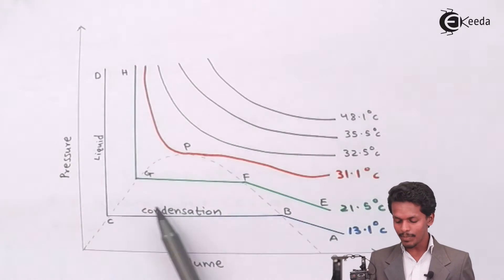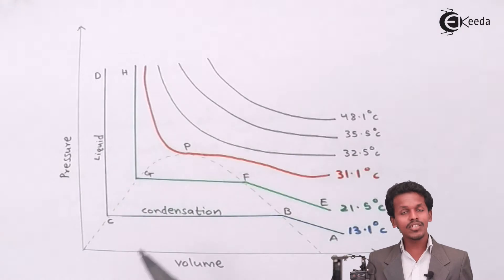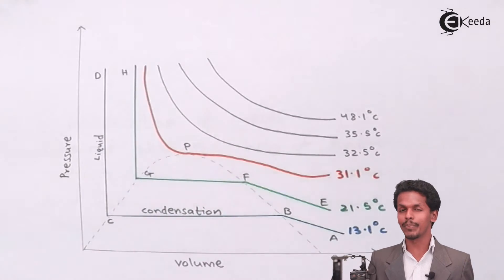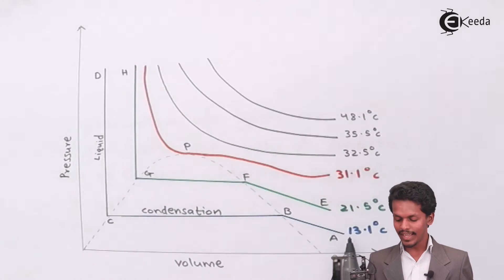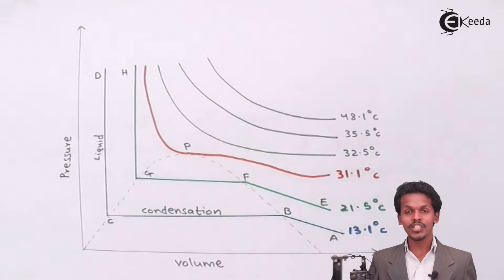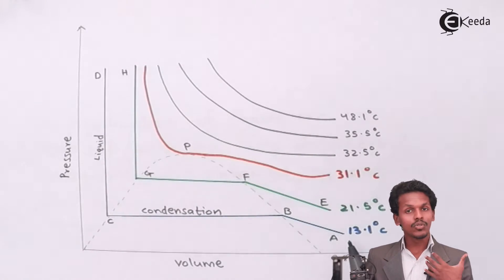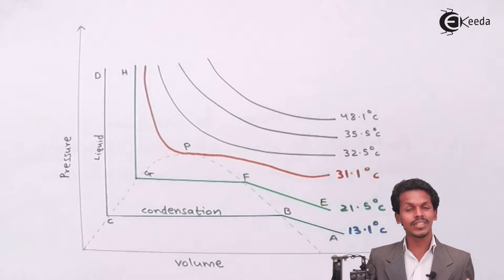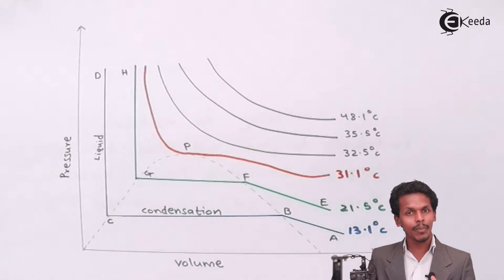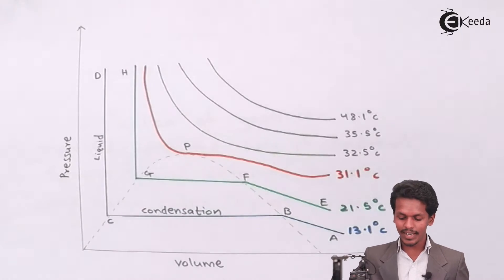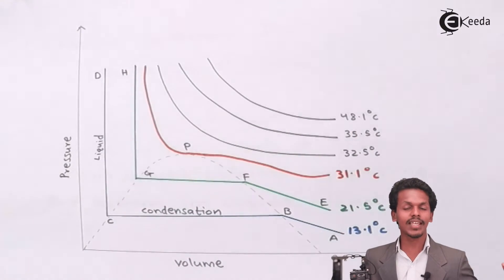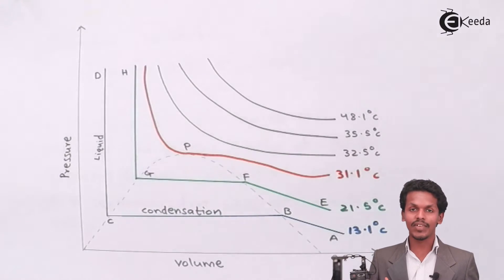We can see many curves in this graph, and each curve is maintained at a constant temperature. For example, curves A, B, C, and D — the blue line — has been studied at a temperature of 13.1 degrees Celsius. This particular graph shape is only obtained at 13.1 degrees Celsius, making it an isotherm at that temperature.